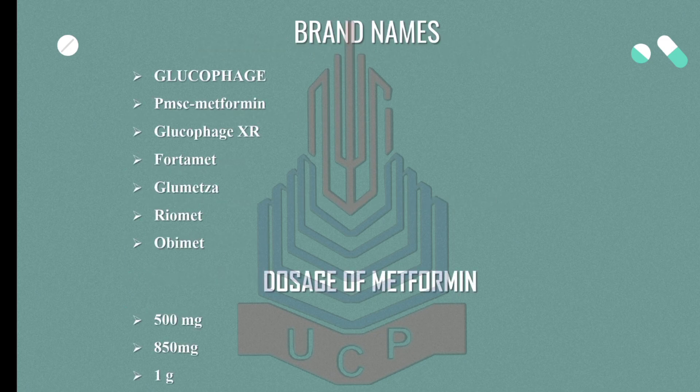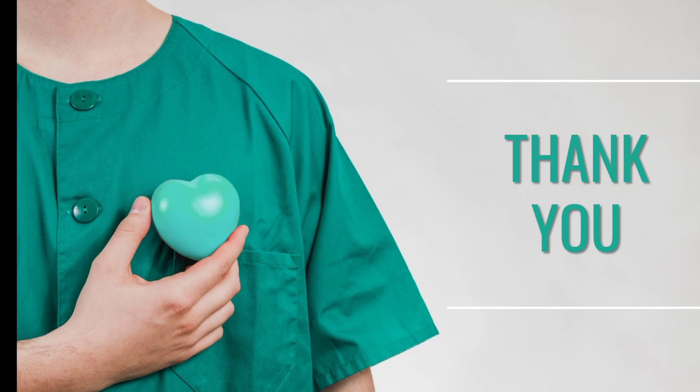Metformin tablets are available in the market under brand names including Glucophage, PMSC Metformin, Glucophage XR, Fortamet, Glumetza, Riomet, and Obimet. Metformin is available in three dosages: 500 mg, 850 mg, and 1 gram.